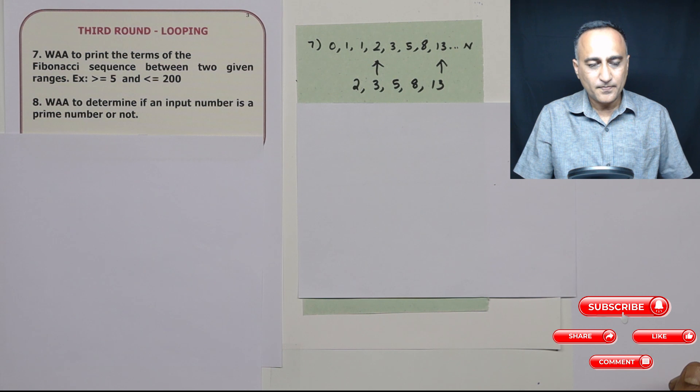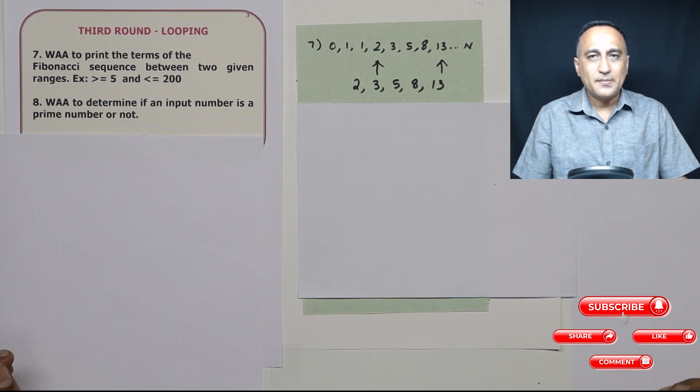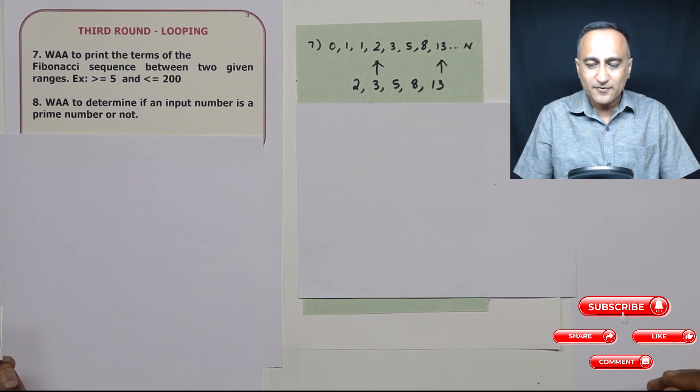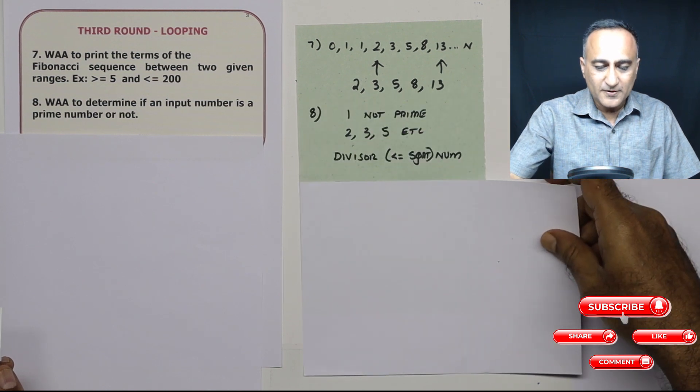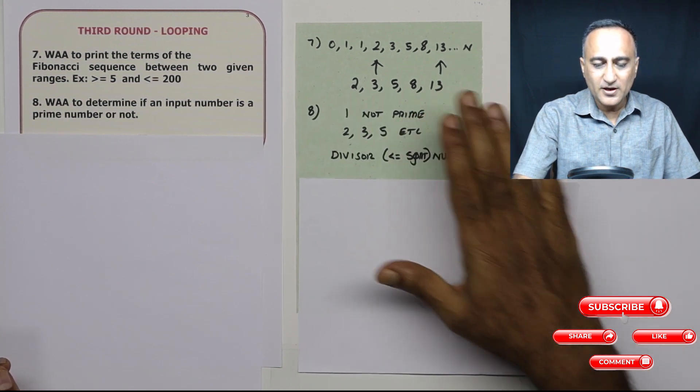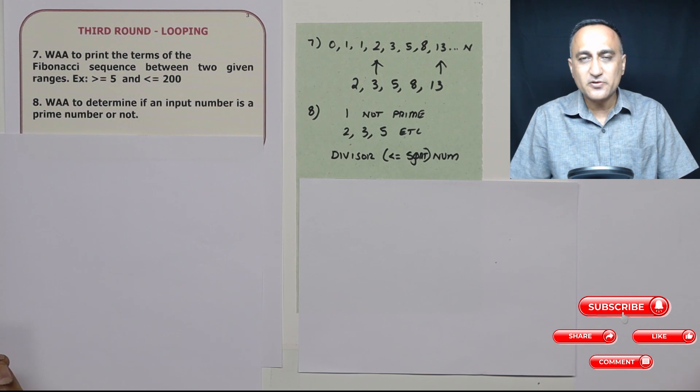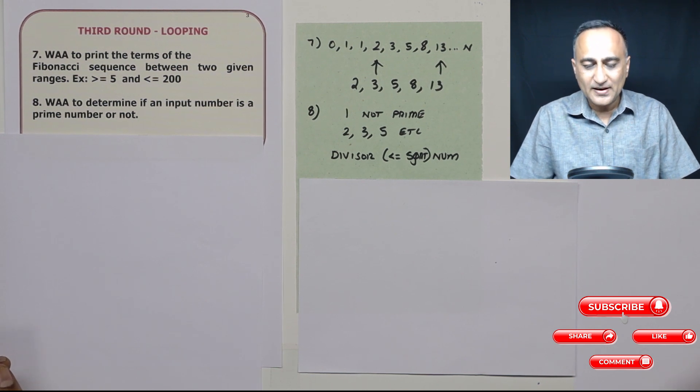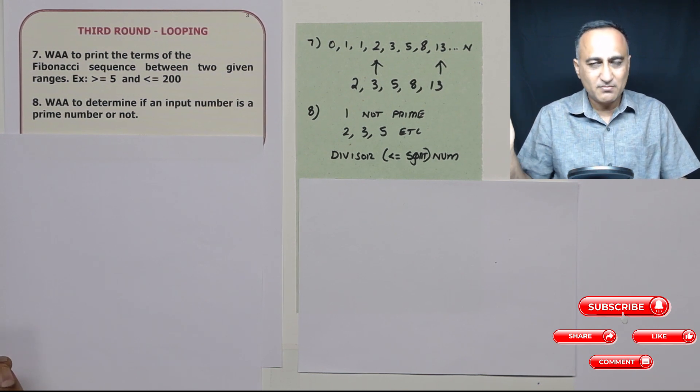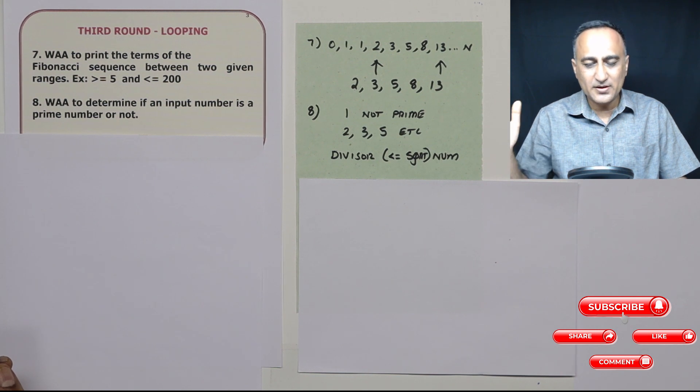Problem number 2: Given an input number, you are required to find if that number is a prime number or not. First, let me tell you one is definitely not a prime number. Examples of prime numbers are 2, 3, 5, 7, 11, 13, 17, 23 and so on.